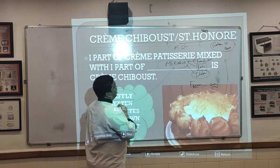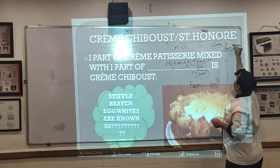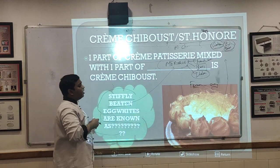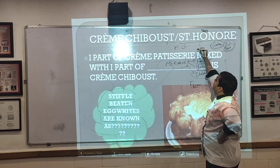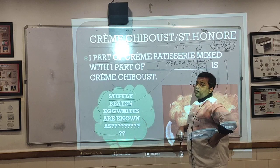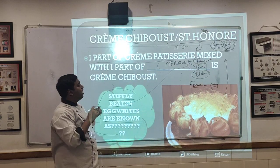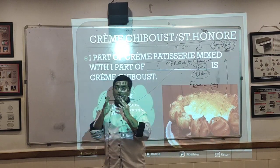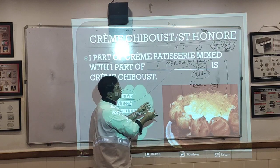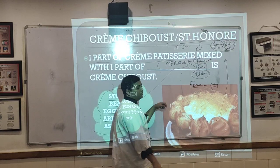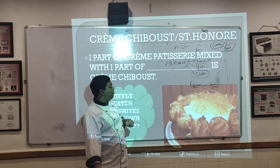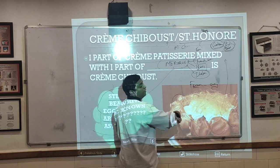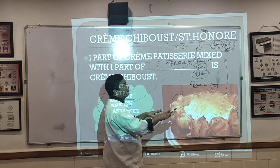The Gâteau Saint-Honoré has a base of puff pastry filled with choux pastry puffs, filled with Crème Chantilly, and the base layer is your Crème Chiboust. You can see profiteroles arranged around it and fresh Crème Chantilly in the center, with a first layer of Crème Chiboust.